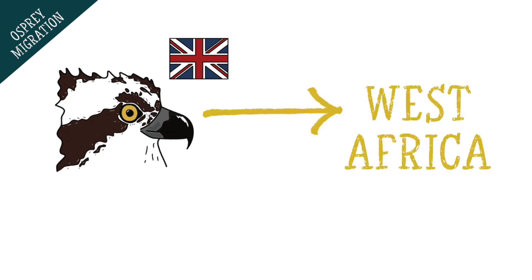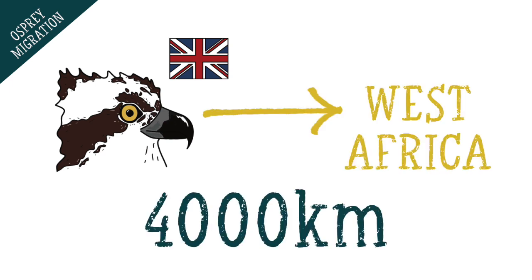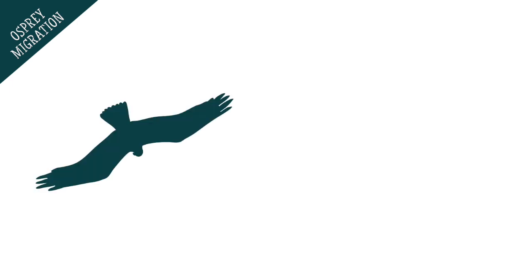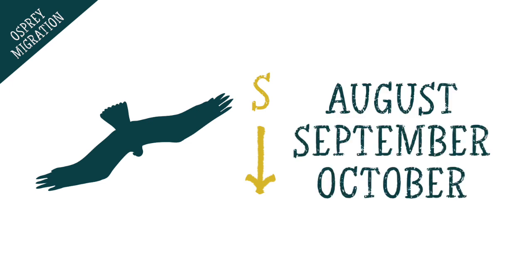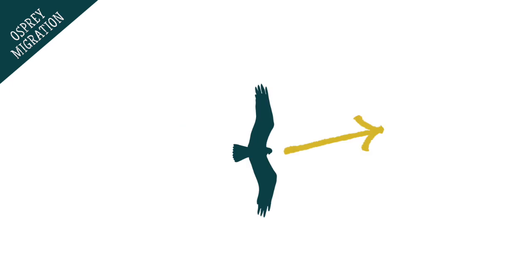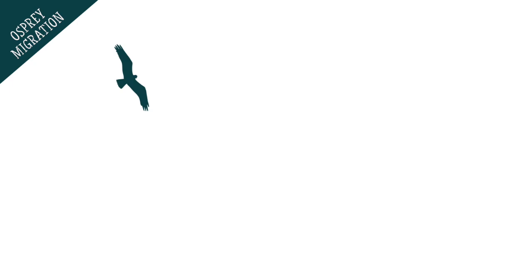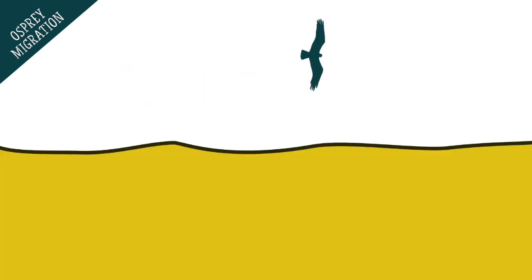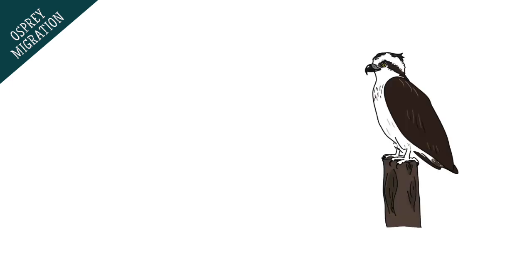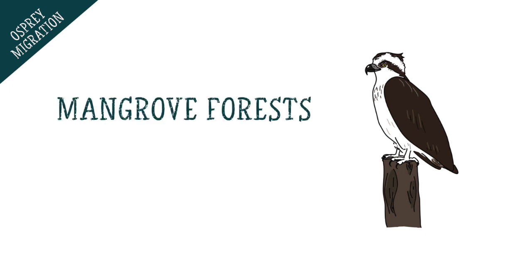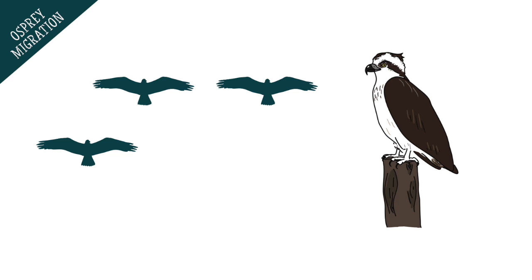Instead they are much more likely to survive if they make a 4,000 kilometre journey. Ospreys usually leave from the UK on their migration south during August, September and October at the end of the breeding season. They make these journeys alone, navigating their way to their wintering grounds. These journeys are difficult especially for young and inexperienced ospreys, having to fly long distances over huge amounts of water, and many even have to journey through the Sahara desert. If they survive their migration they usually come to settle around the coasts in mangrove forests and estuaries, often living amongst other ospreys and birds.